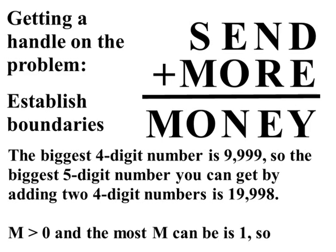So, the biggest five-digit number you can get by adding two four-digit numbers is 19,998.